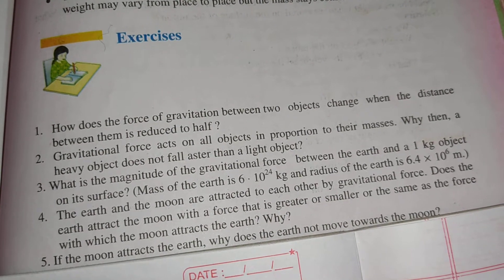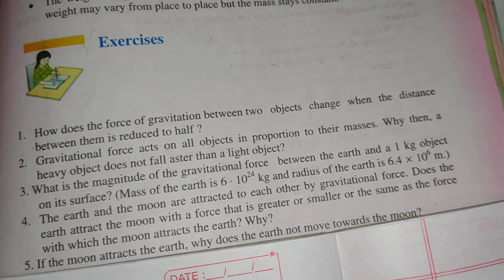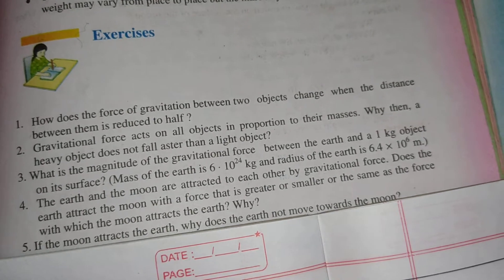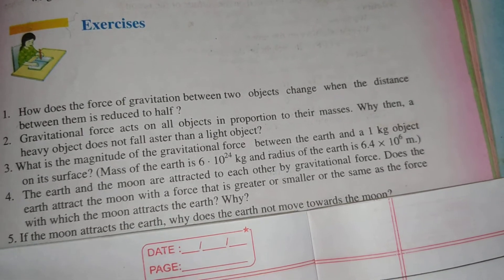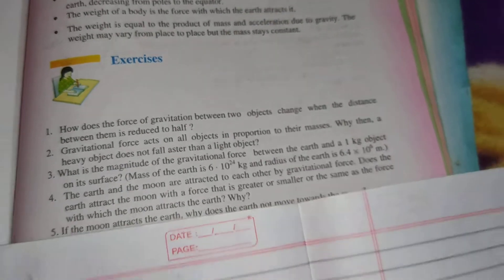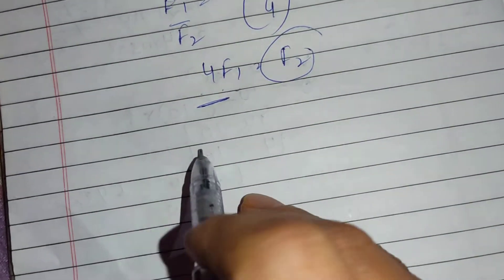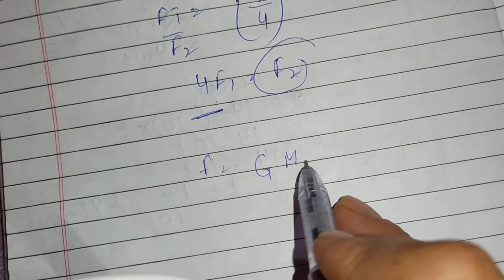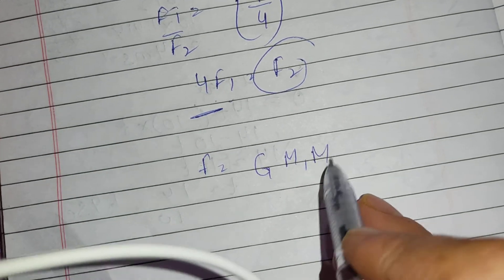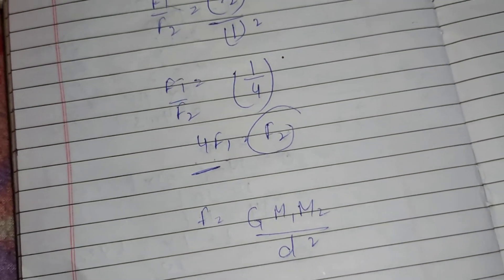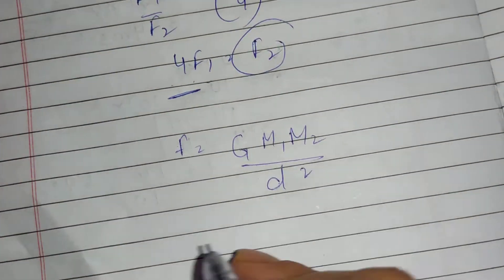The next question is: what is the magnitude of the gravitational force between the Earth and a 1 kg object? We need to find the gravitational force F. The formula is F equals G M1 M2 upon D squared. We need to substitute the values.